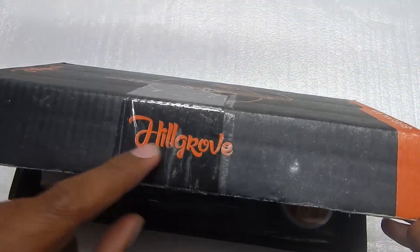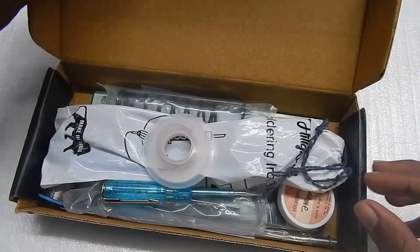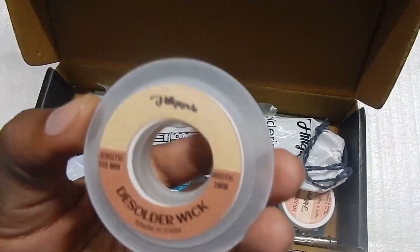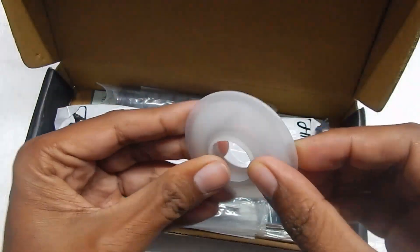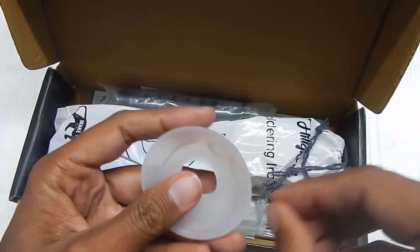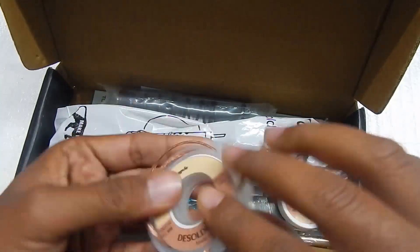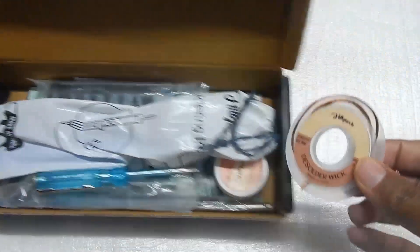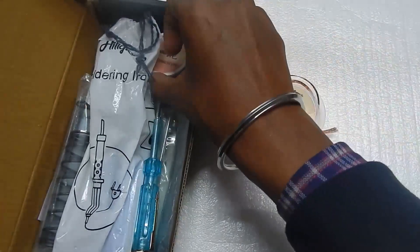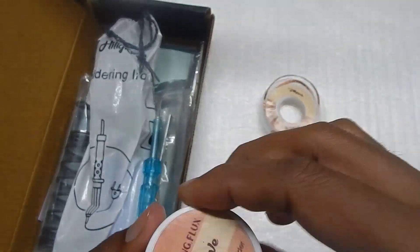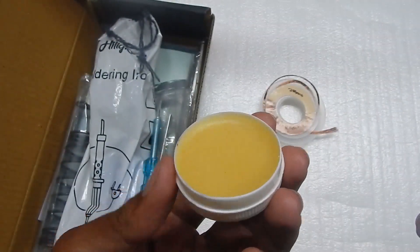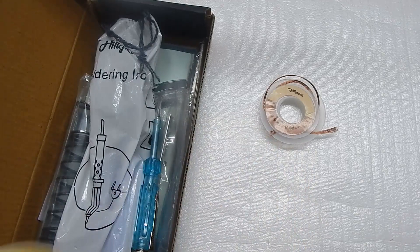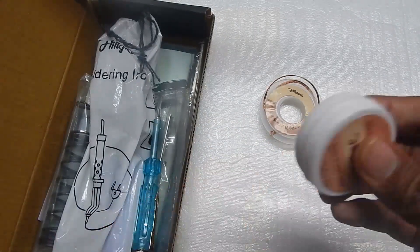This is the box with the Hillgrove logo. The first thing you get is a small shoulder wick, about 30 centimeters. The second item is shoulder flux, 15 grams, also made in India. The flux looks decent quality and smells like flux.